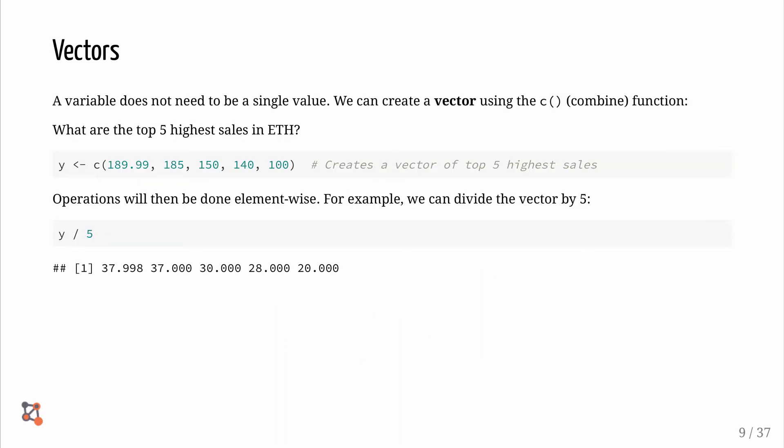In R, a variable doesn't need to be a single value. We can create a vector using the combine function. Let's create a variable called y with the top five highest sales in Ethereum. Operations will then be done element-wise. For example, we can divide the vector by five. This is the result.